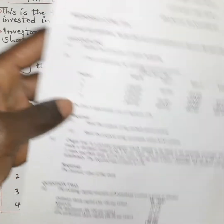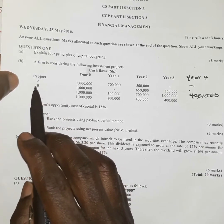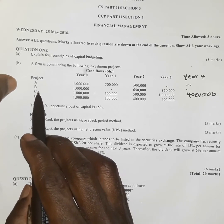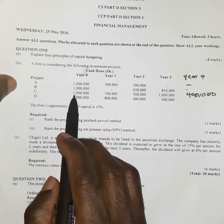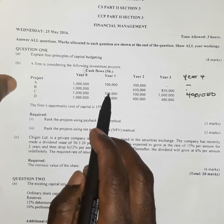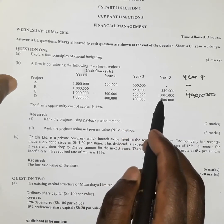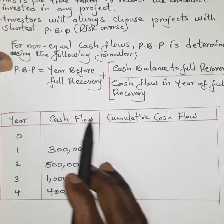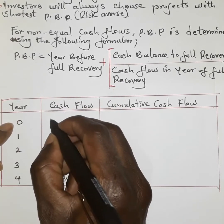From our close examination, this formula revolves around the concept of full recovery. We have been given projects A, B, C, and D, but we are only going to look at Project C. The initial cash outflow at year zero is one million. Year one is three hundred thousand, year two is five hundred thousand, year three is one million, and year four is four hundred thousand. These are non-uniform cash flows.